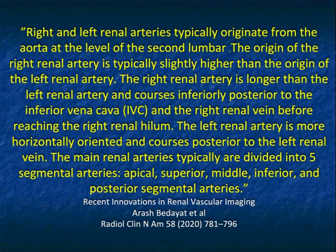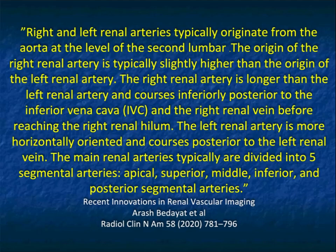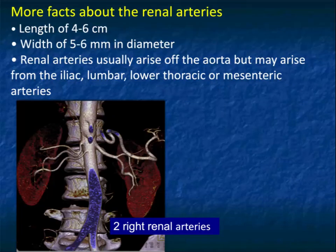The renal arteries typically arise at the level of the second lumbar vertebral body. When planning for a renal donor, surgeons typically prefer to remove the left kidney, so it's very important to look at the left kidney extremely carefully. If there are issues with the left kidney, they'll go to the right. If a patient has an abnormal kidney, they will not be a donor. The left renal artery is typically more horizontally oriented and courses posterior to the left renal vein. We also discuss pre-hilar branching — less than 2 centimeters from the origin of the vessel.